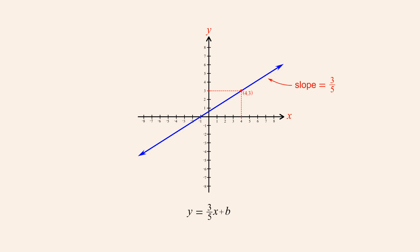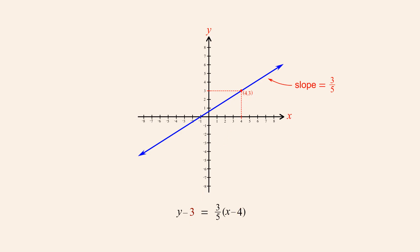Since we know the slope and the coordinates of one point, we can write the equation for this line using the point-slope form. Since the slope is three-fifths, we assign a value of three-fifths to the constant m, and since the coordinates of the known point are (4, 3), we set the value of x1 and y1 to four and three. So the equation for this line in point-slope form is y minus three equals three-fifths times the quantity x minus four.